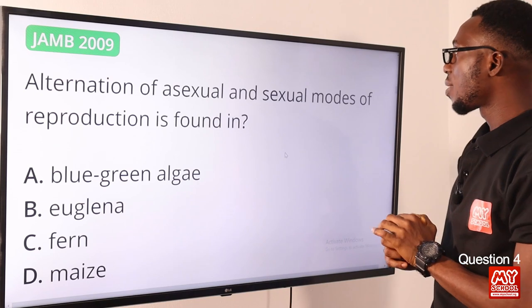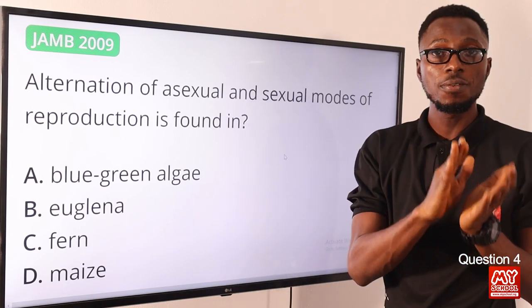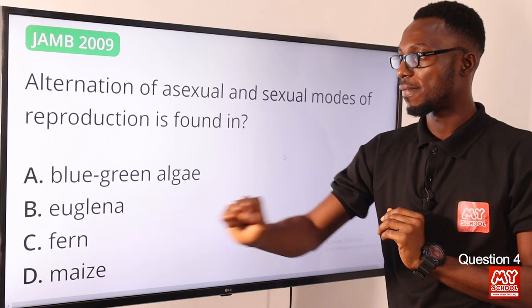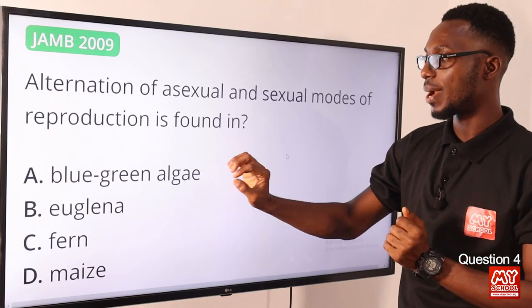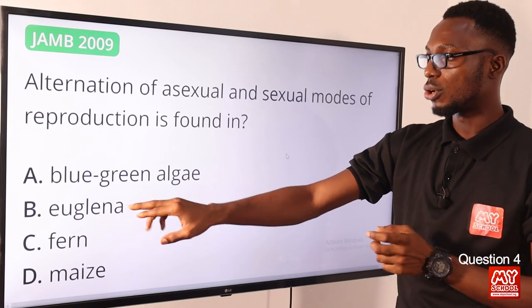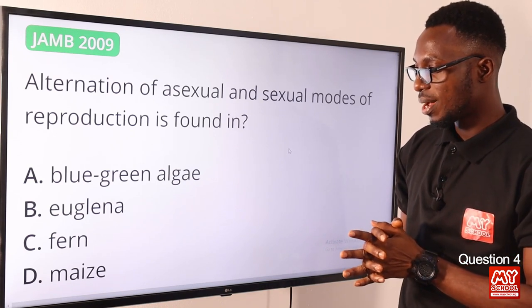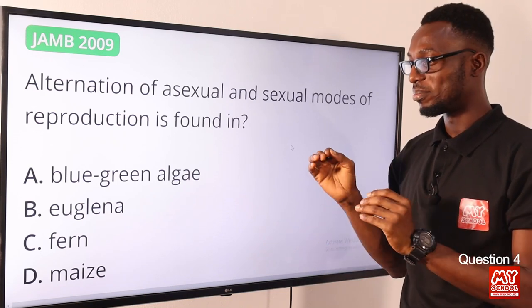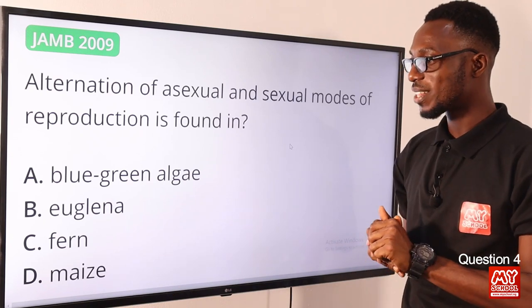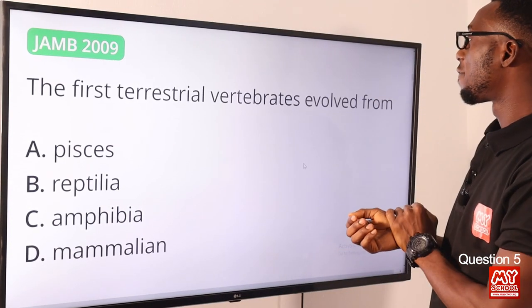Question four: alternation of asexual and sexual modes of reproduction is found in ferns — tracheophytes. You look at the sporophyte generation and the gametophyte generation. Blue-green algae like Nostoc and Anabaena reproduce by binary fission, which is asexual. Maize is a monocotyledon under angiosperms. The correct option is option C, for ferns.